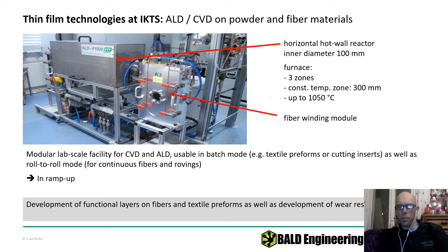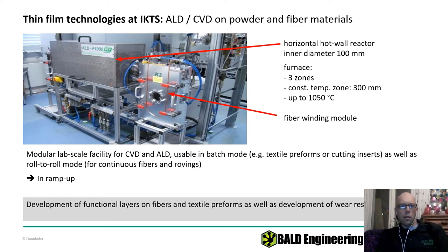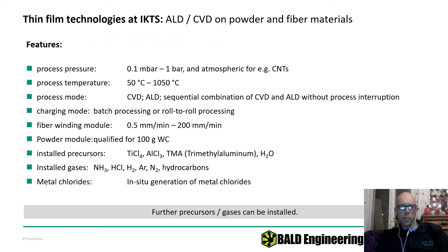The quartz insert is easy to swap when processing different materials — just remove it, clean it, and move to the next powder or tool bit coating experiment. The furnace can run in both ALD and CVD mode and has a large cocktail bar of precursors behind it. Process pressure runs from 0.1 millibar up to one bar.